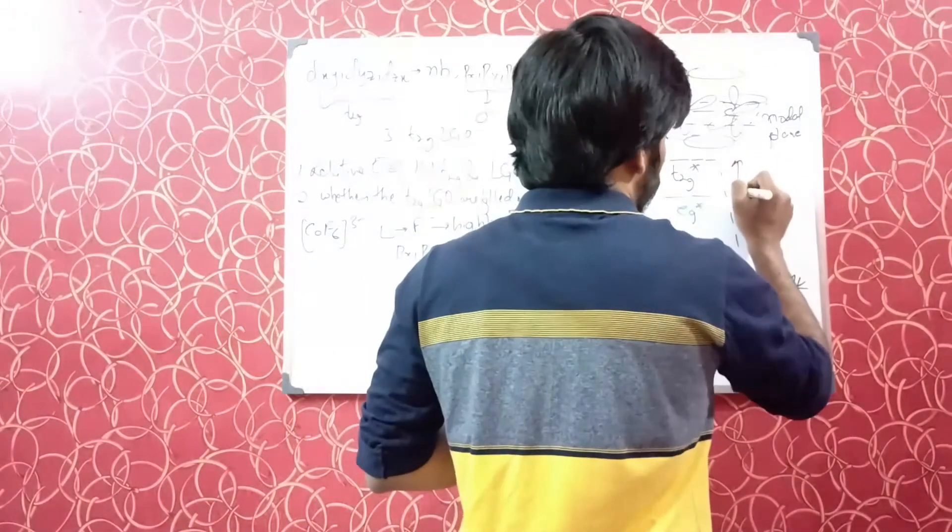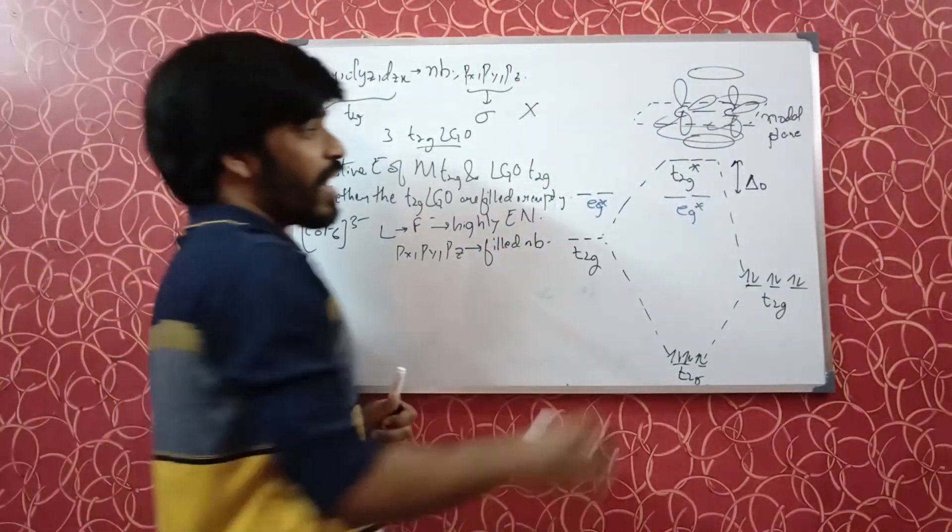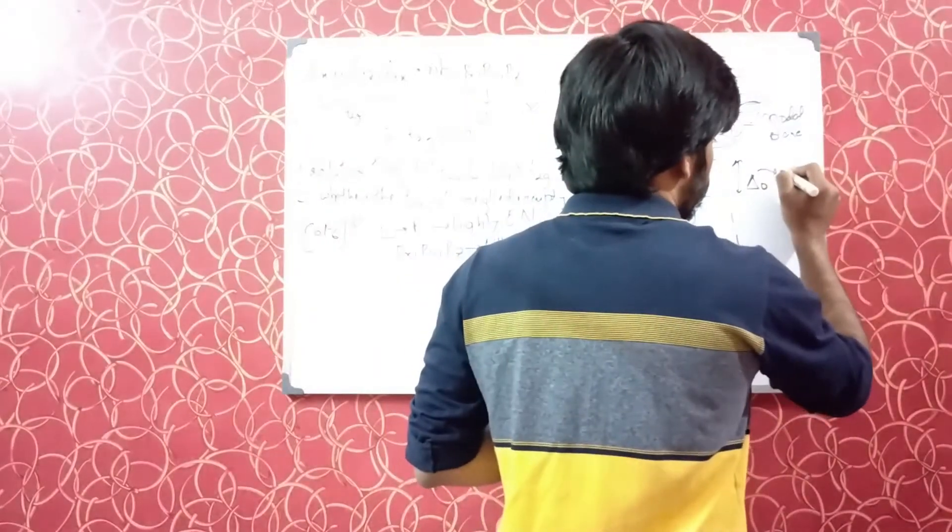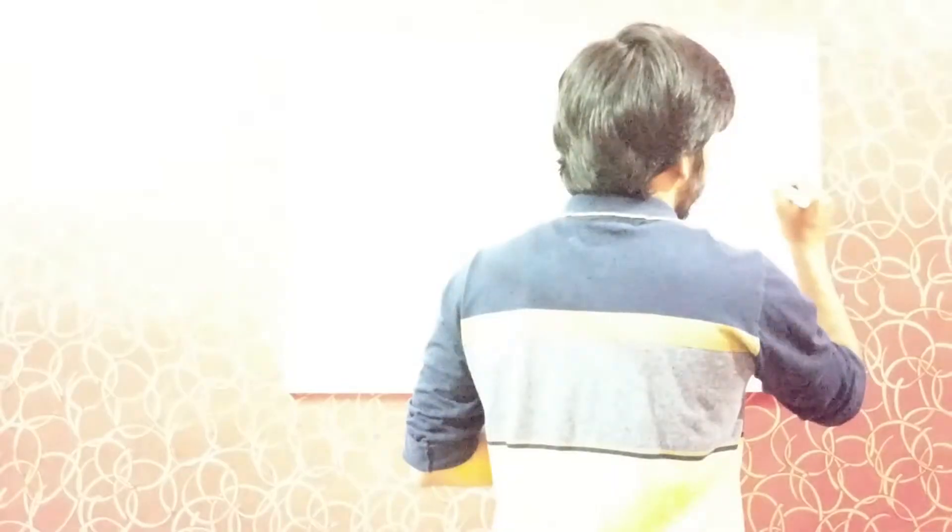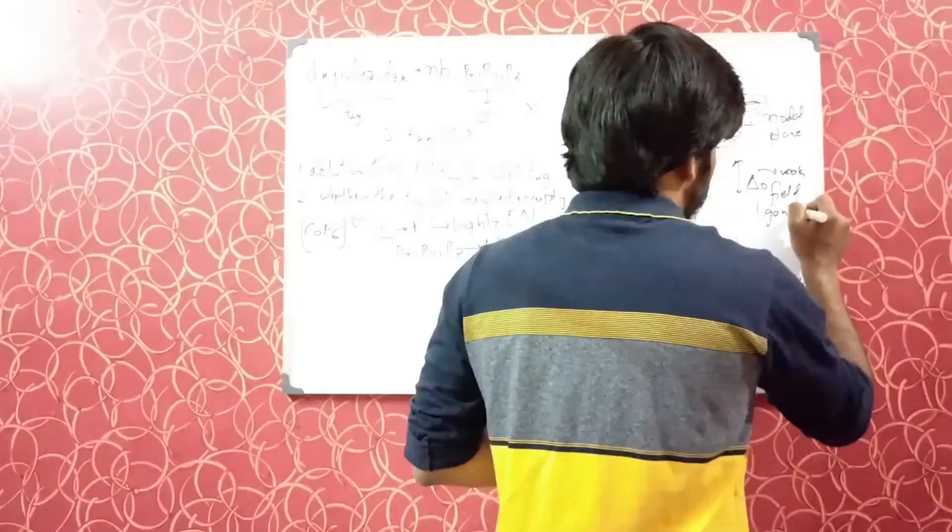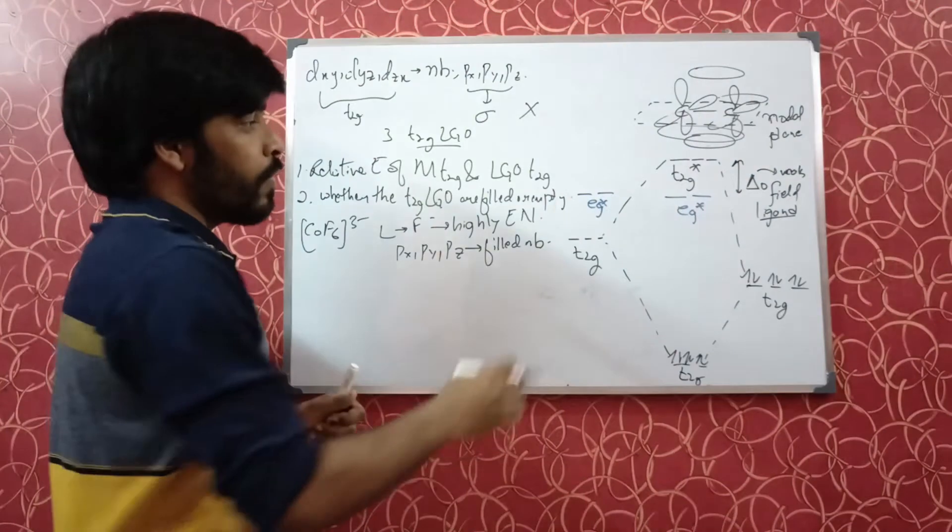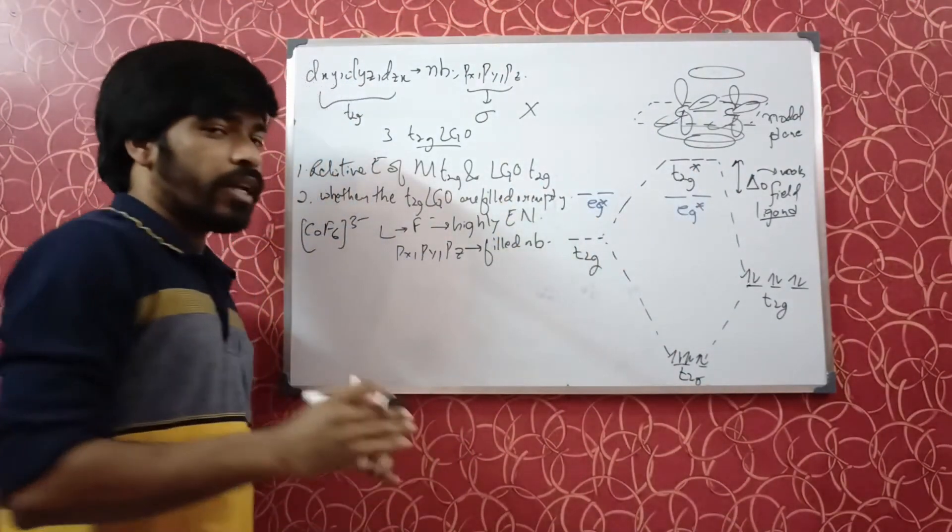So this is now the splitting, that is the crystal field splitting in octahedral complexes. Now that has decreased, which is the case of weak field ligands. So you can find some correlation of the weak field ligands from the molecular orbital approach also.